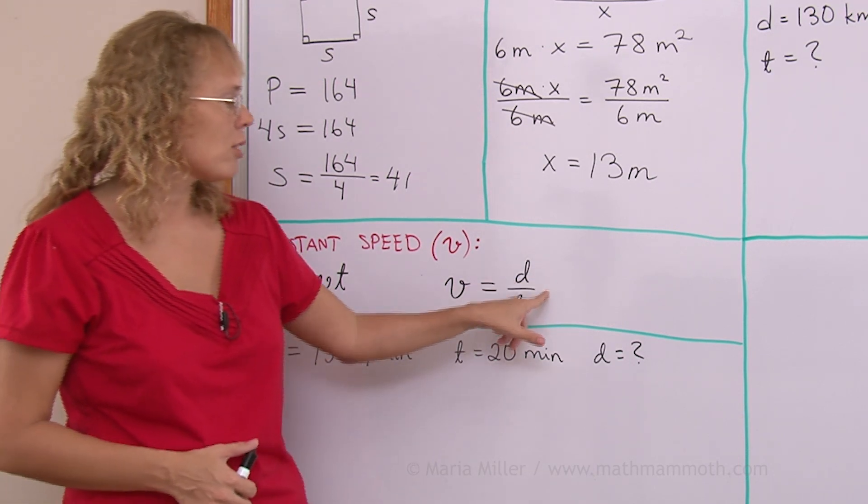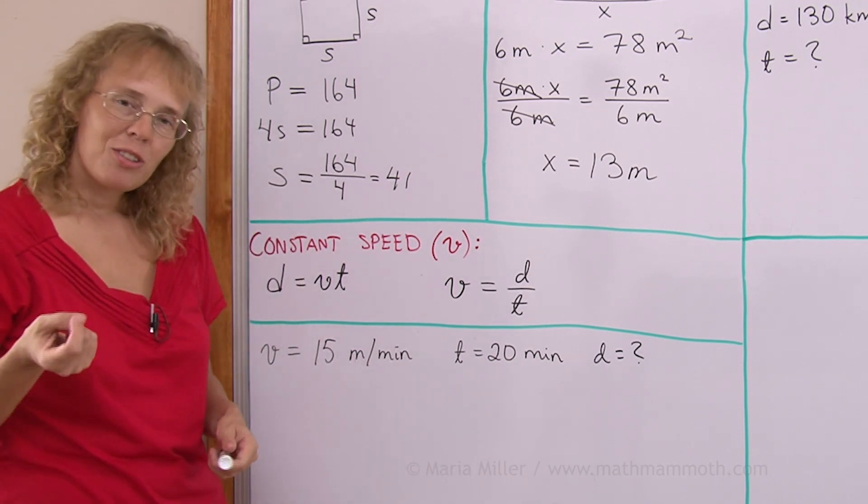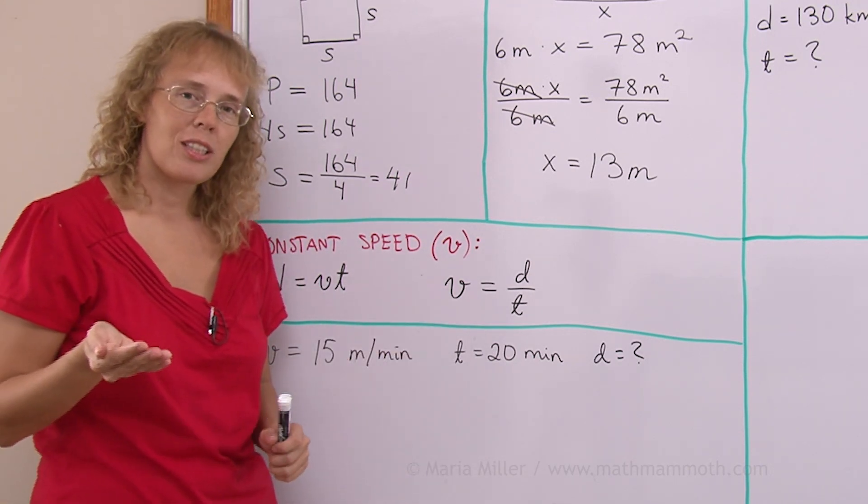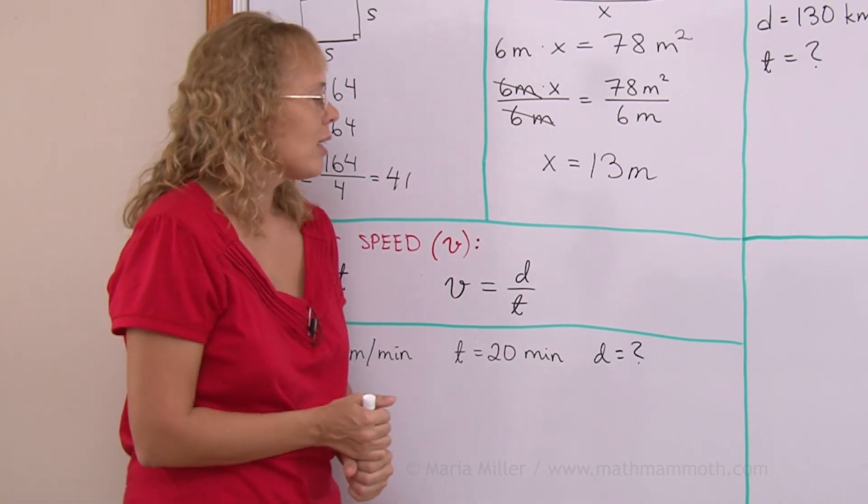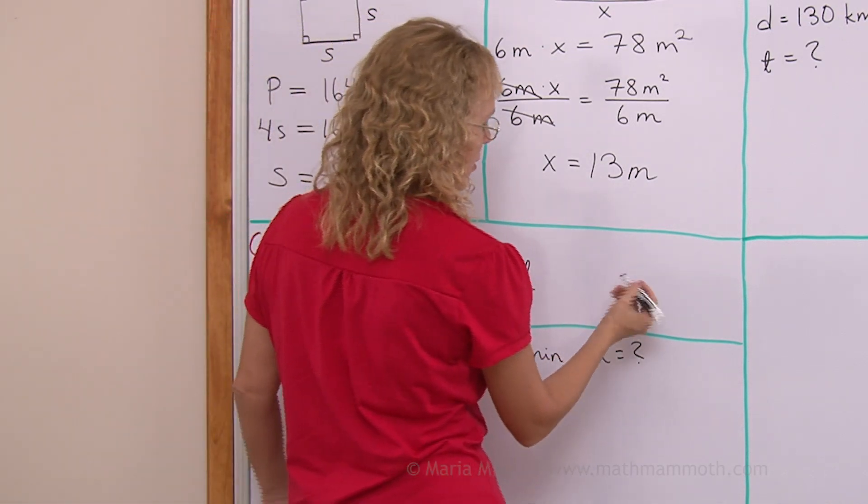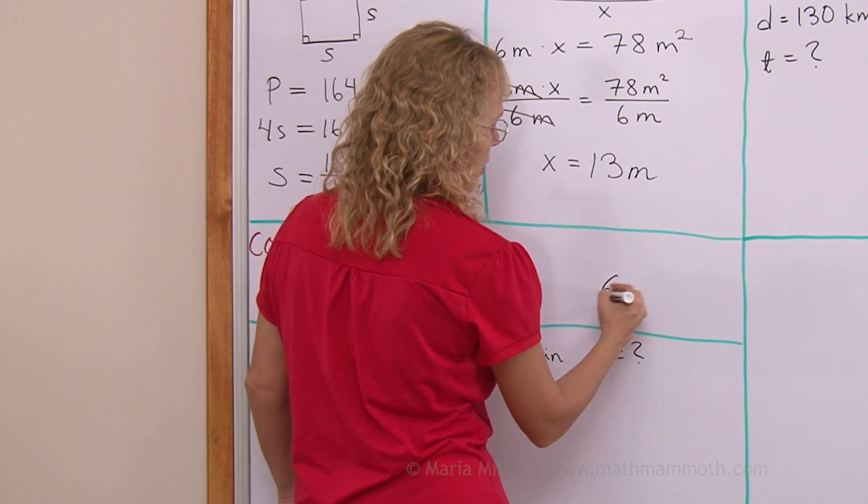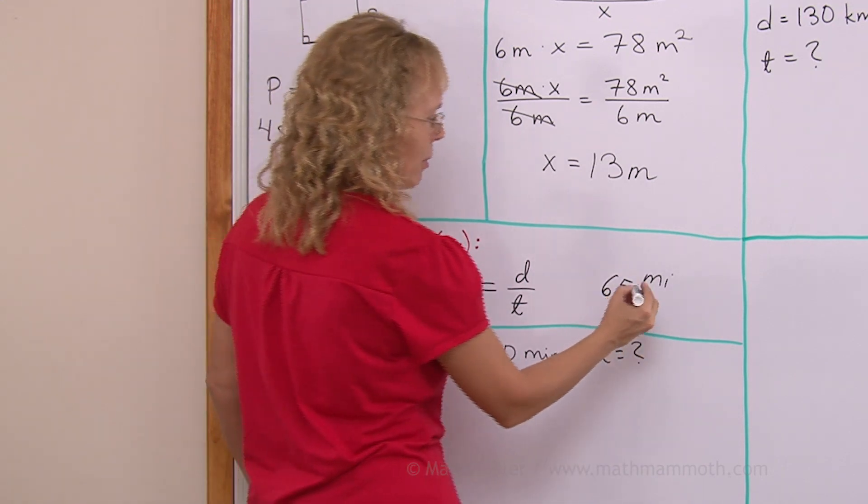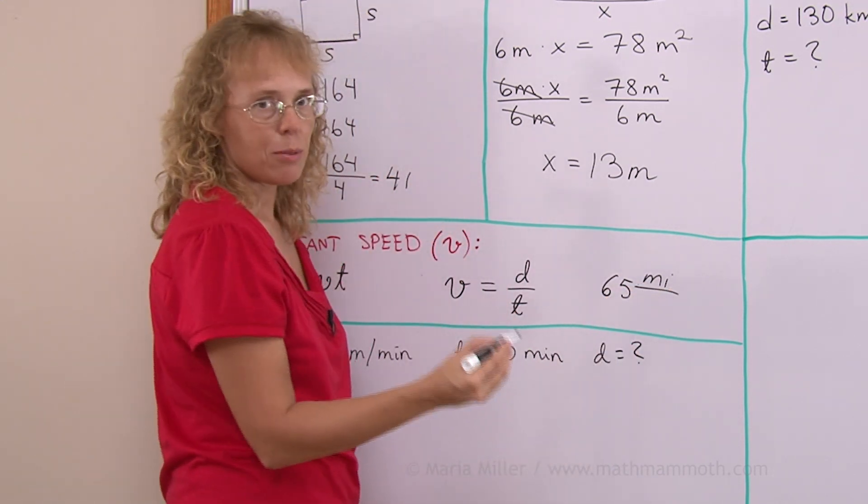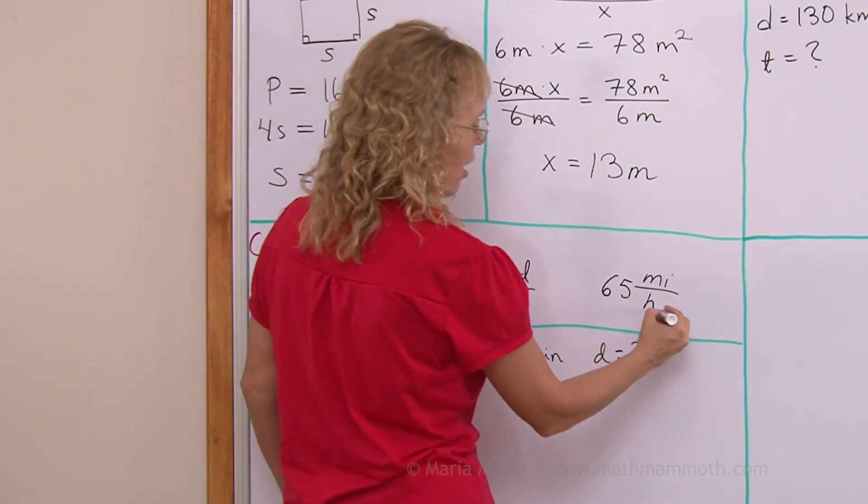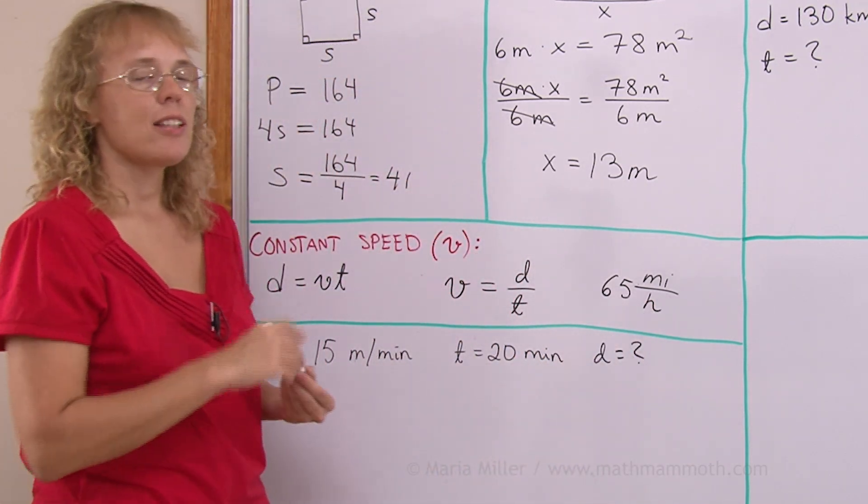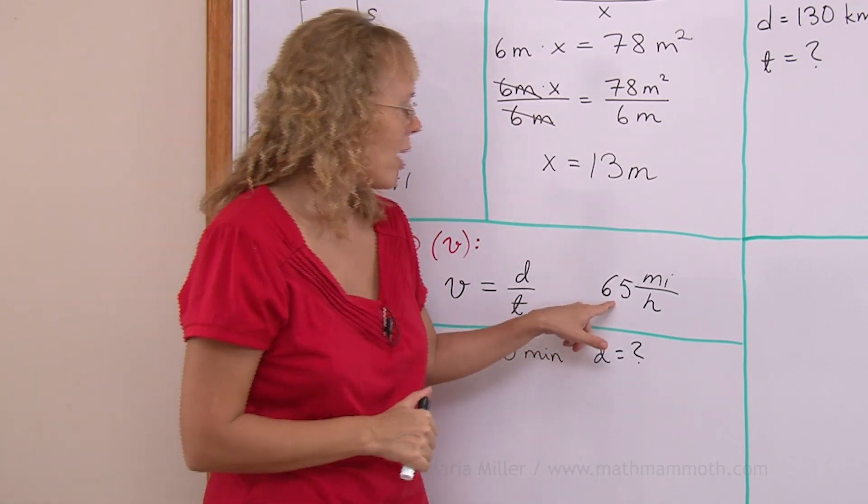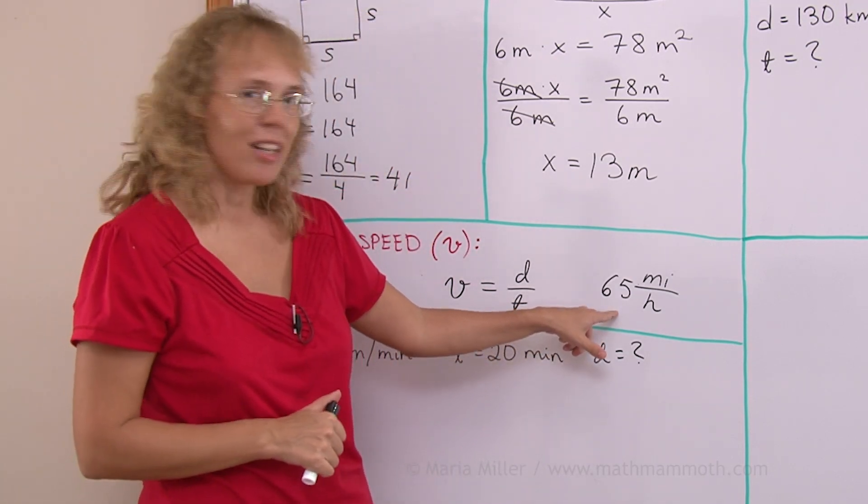This one is velocity equals D over T and I'll give you a trick to remember this one. Now you know how we usually tell the speed of cars. Let's say somebody is driving their car at the speed of 65 miles per hour. But let me put the division line for the per. Per means division. 65 miles per hour.